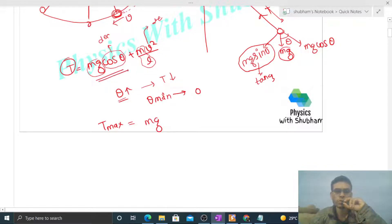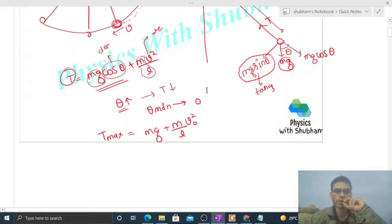So that will be mg. If I put theta equals zero, then cos theta will be one, plus m by L into v square. Let's say at mean position the speed is v naught, so v naught square. What is v naught? v naught is the speed of this pendulum at the mean position.